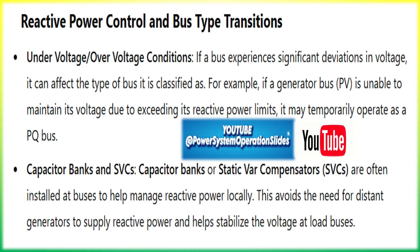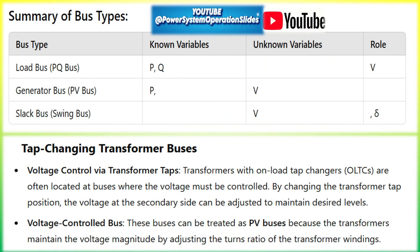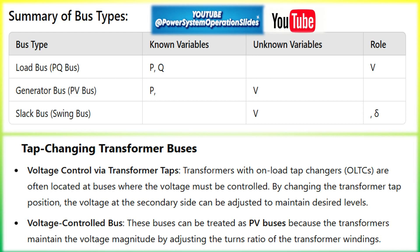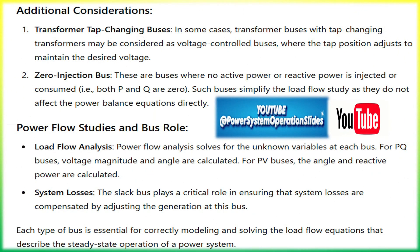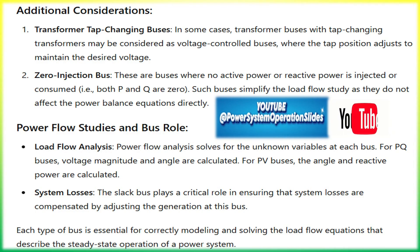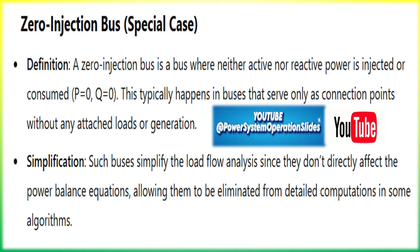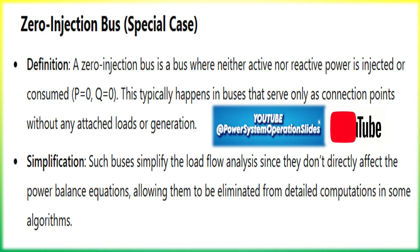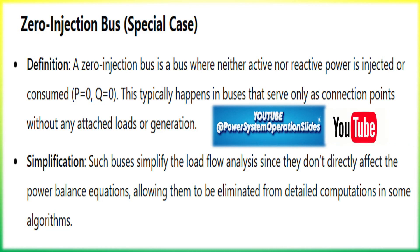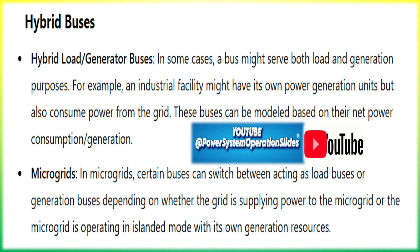Voltage regulation: at generator buses, the voltage magnitude is kept constant by adjusting the reactive power output of the generator. This helps maintain voltage levels across the grid, which is essential for stability and reliability of power delivery. AVR — automatic voltage regulator: most generators are equipped with an AVR that senses voltage levels and adjusts the generator's excitation to maintain a set voltage level. This is why voltage magnitude V is specified for PV buses, as the generator compensates for reactive power variations automatically. There are physical limits on reactive power; beyond these limits the bus could be converted from a PV bus to a PQ bus, which occurs if the generator cannot maintain the required voltage while staying within its reactive power limits.